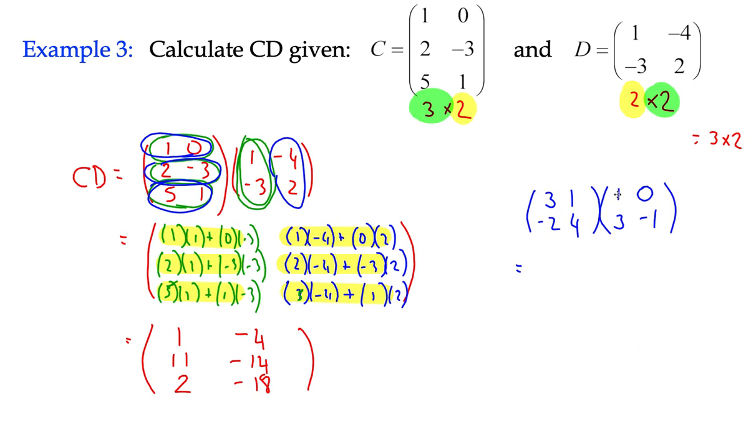So I've got three times one is three plus one times three is three, which is six. Underneath, I've got negative two, four, and one, three. Negative two times one is negative two plus twelve is ten. Up to the second column, three times zero is zero plus one times negative one is negative one. And then last element, negative two times zero is zero plus negative four. That's how it will look in practice.